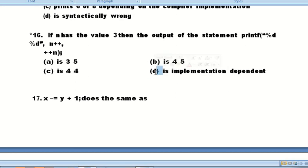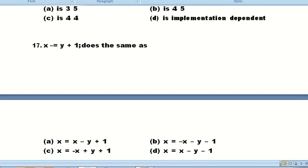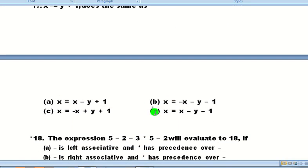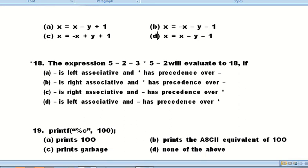Question number seventeen: x -= y + 1 does the same as - compound assignment operator is used. It has the same effect as option D: x = x - y - 1.